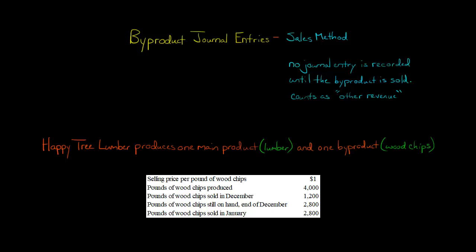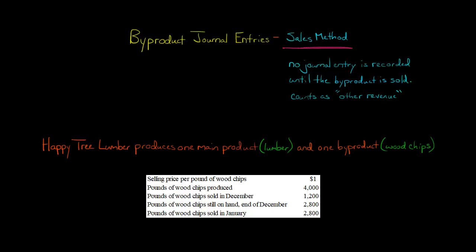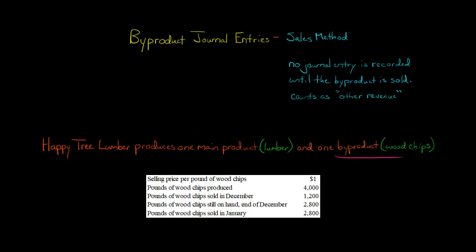In this video, I'm going to show you how to make the journal entries for a byproduct when a company uses the sales method. So let's do an example. We've got a company that makes one main product, lumber, and then they happen to get a byproduct when they make the lumber, and that byproduct is wood chips.